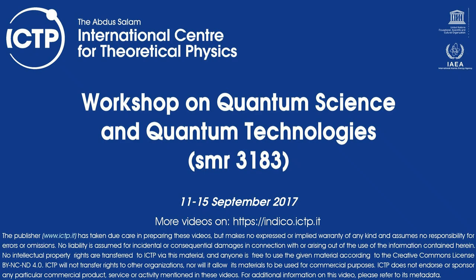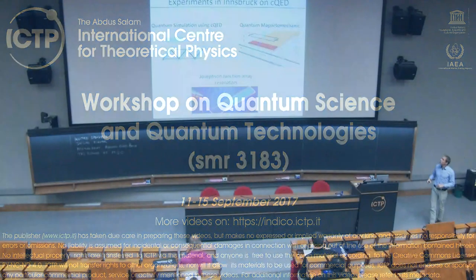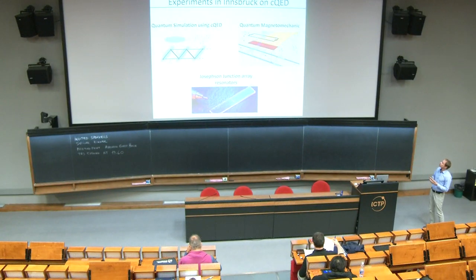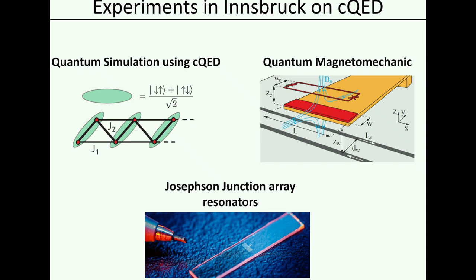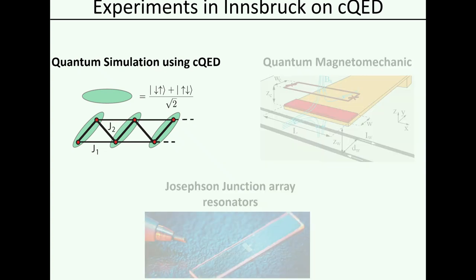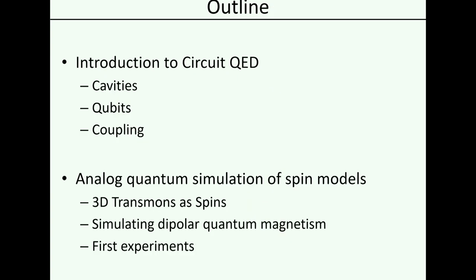Some of the things we are working on in Innsbruck: we are trying to use superconducting circuits for a couple of different things — we want to couple them to micro-mechanical oscillators using magnetic fields, we are trying to use them to build structures for amplifiers and single-photon microwave switches, and the topic I want to talk about today is how we want to use them to build systems to perform analog quantum simulation. Here is a short outline of my talk: I want to first give you an introduction to circuit QED — what are cavities, how do we realize qubits, how do we couple the two.